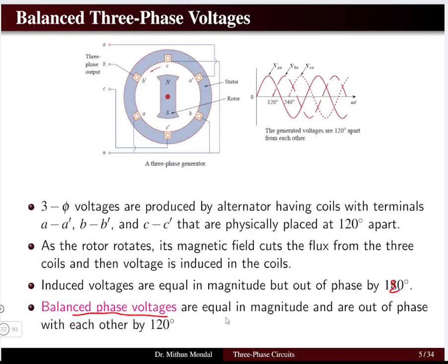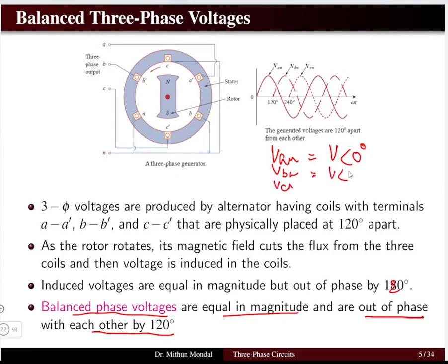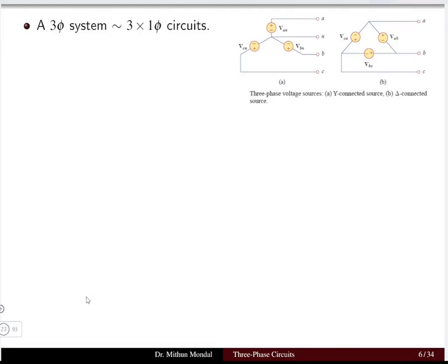Balanced phase voltages are equal in magnitude and out of phase with each other by 120 degrees. Taking van as the reference phase at zero degrees, vbn and vcn have a phase difference of 120 degrees with respect to each other, but the magnitude remains the same — hence the term balanced phase voltages. Three-phase systems are identical to three single-phase circuits combined.